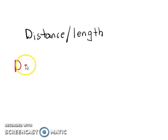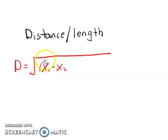Distance equals the square root of (x1 minus x2) squared, and then we plus with (y1 minus y2) squared. This is the formula we will use to calculate distance or length of a straight line.